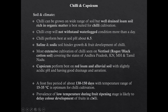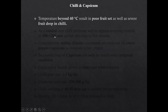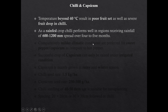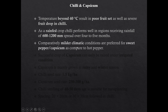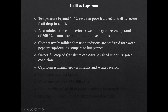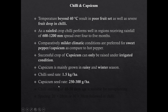Prevalence of low temperature during fruit ripening stage is likely to delay fruit color development in chili and capsicum. Temperature beyond 40 degree Celsius results in poor fruit set and severe fruit drop in chili. As a rain-fed crop, chili performs well in regions receiving rainfall of 600 to 1200 millimeters spread over 4 to 5 months. Comparatively milder climatic conditions are preferred for sweet pepper or capsicum. Successful crop of capsicum can only be raised under irrigated condition; capsicum is mainly grown in the winter season. Seed rate of chili is 1.5 kg per hectare, and for capsicum it is 250 to 300 gram per hectare.